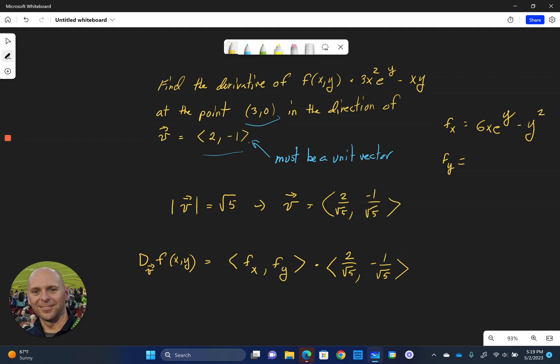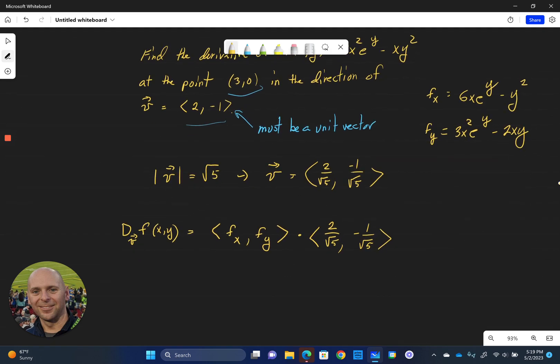Now we take the partial with respect to y of the first term, and this is going to be e to the y times 3x squared, minus the partial of the second term with respect to y, which is going to be minus 2xy. So there we have our partials that we'll drag down into our directional derivative formula.